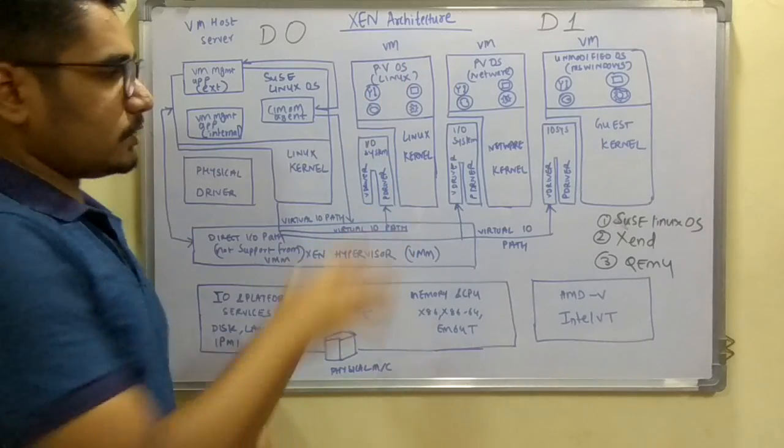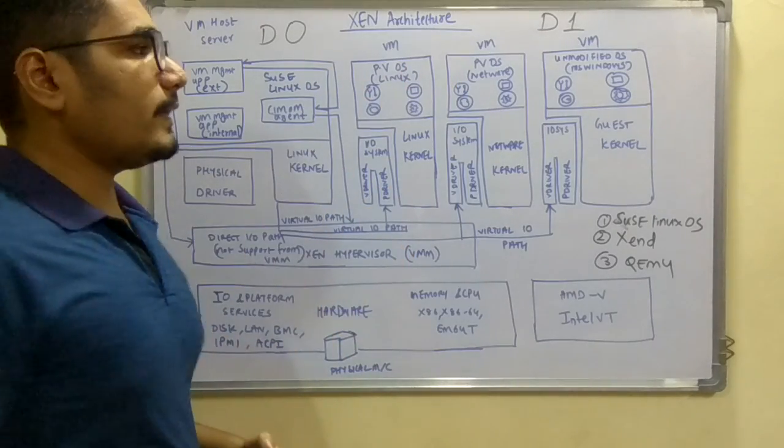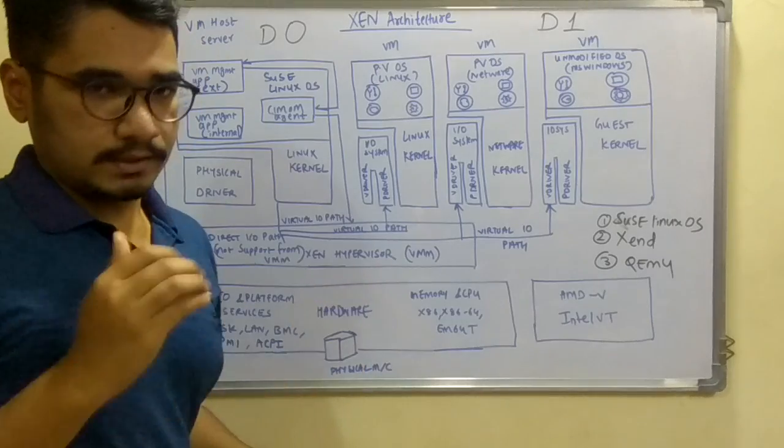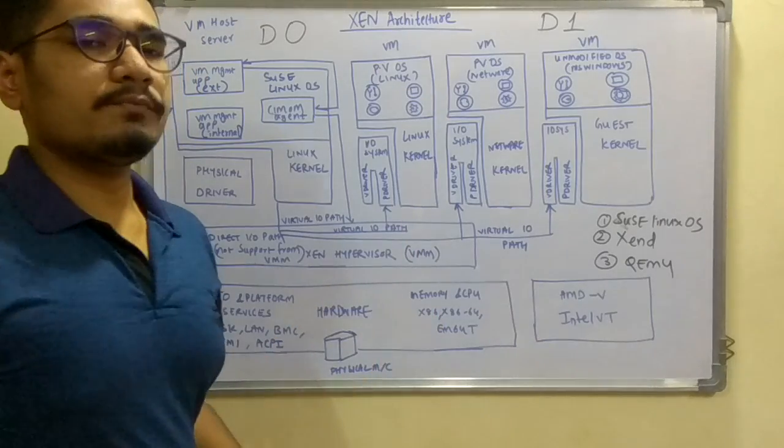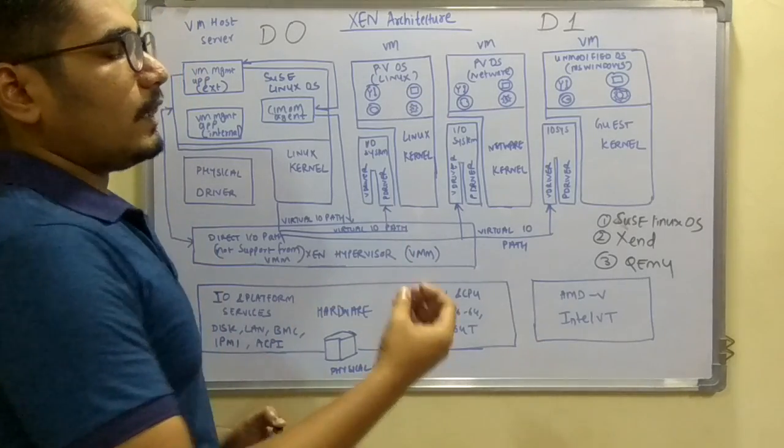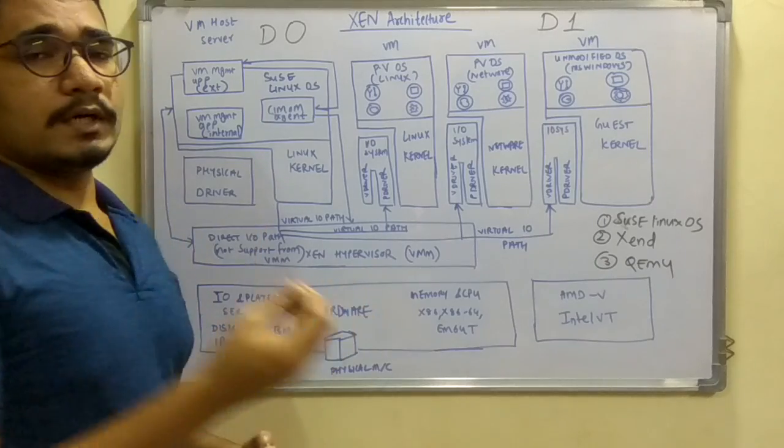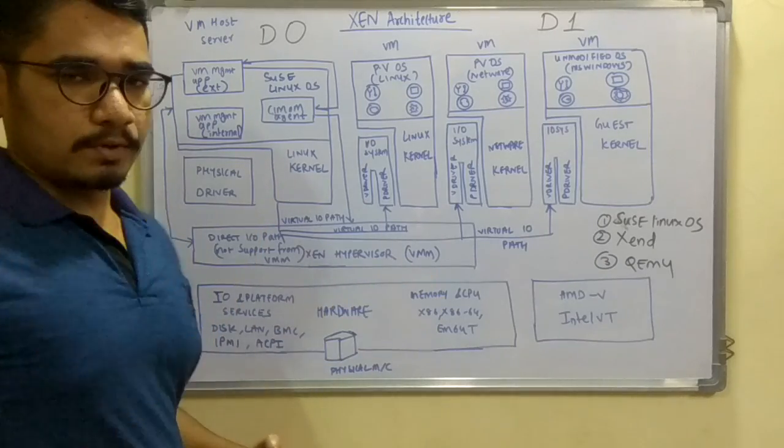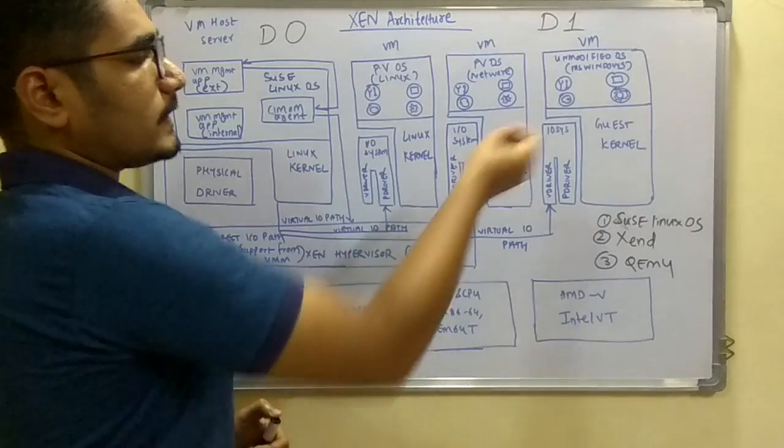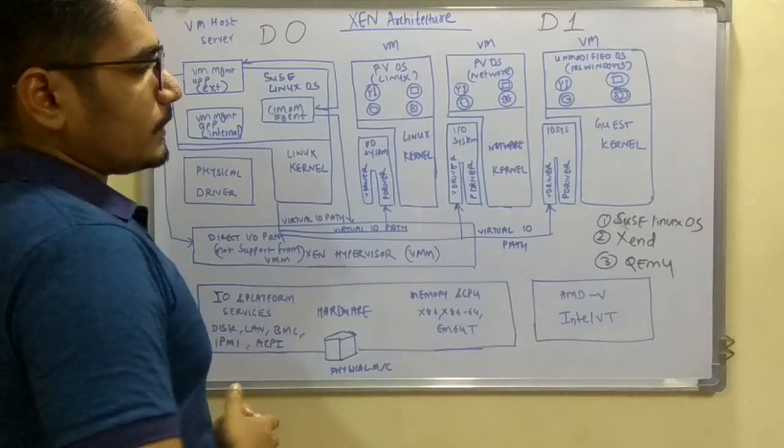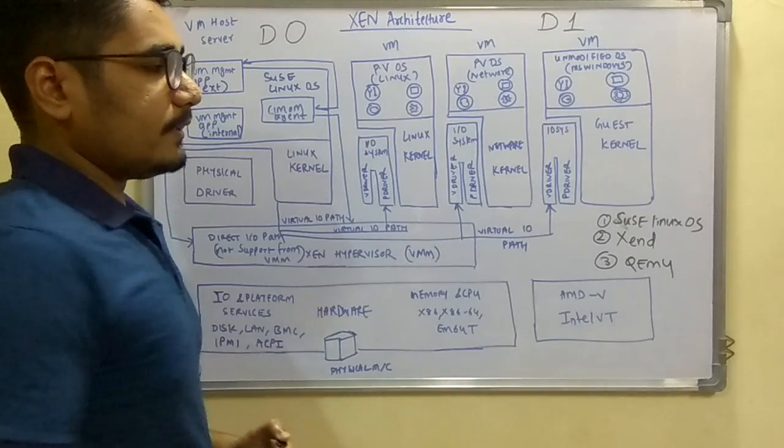At the extreme end you have an unmodified OS running, which would be Microsoft Windows, and it could be a version of OS 2003 or Windows XP. It runs a guest OS mainly. It also has the V driver and P driver, that is virtual driver and physical driver.